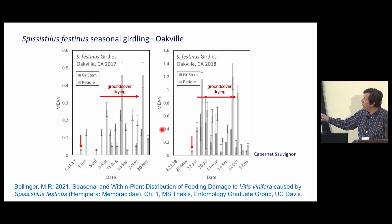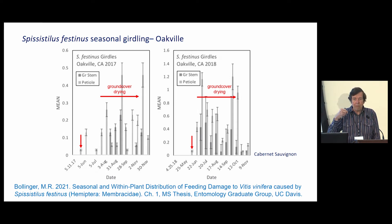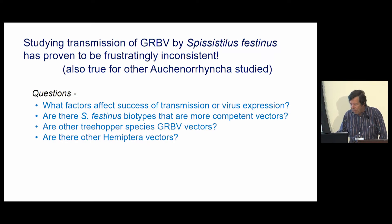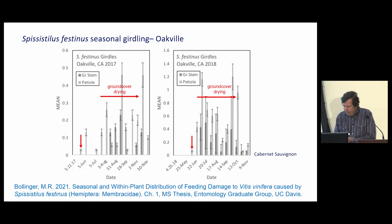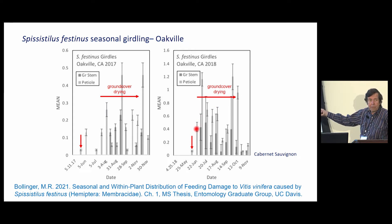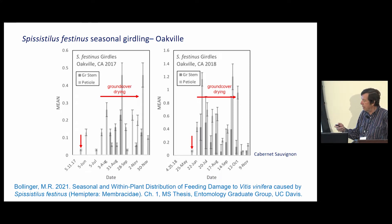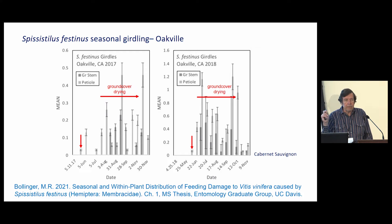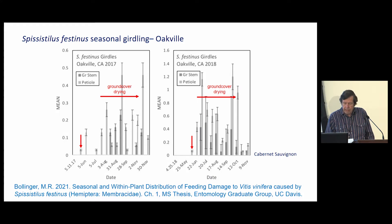The numbers here are the number of girdles per vine. In the study we would remove the girdles as we found them throughout the year, so this is actually the number of girdles occurring during each previous two-week period, per vine. This was 30 vines sampled in each vineyard during each visit. The light bars are the number of girdles on the petioles and the darker bars the number on the stems, so we see a few more on the petioles than on the stems, but we see them at both locations.